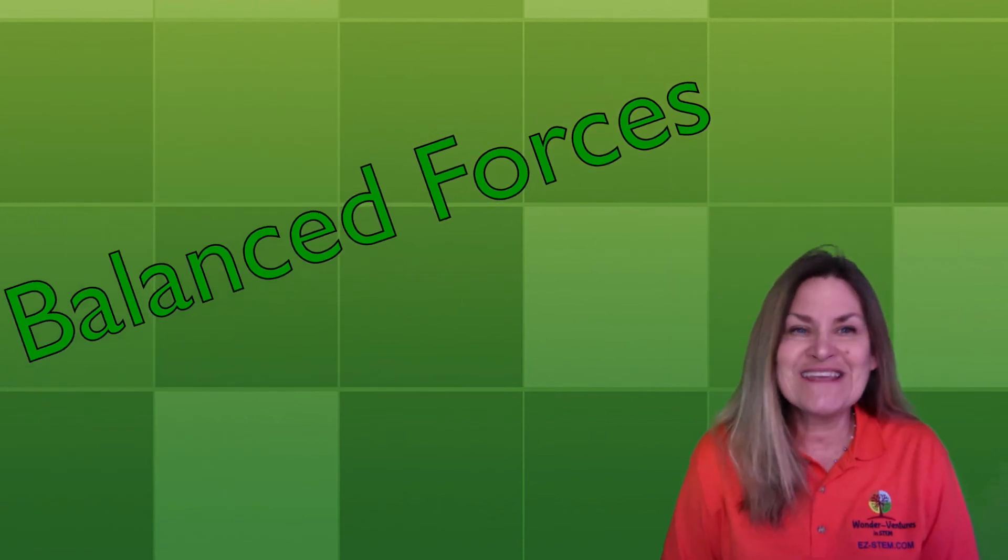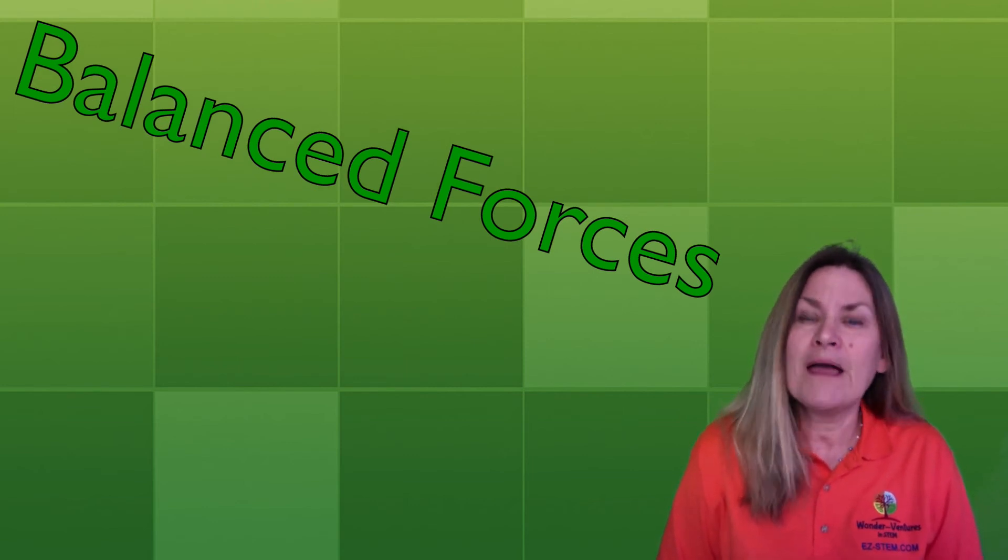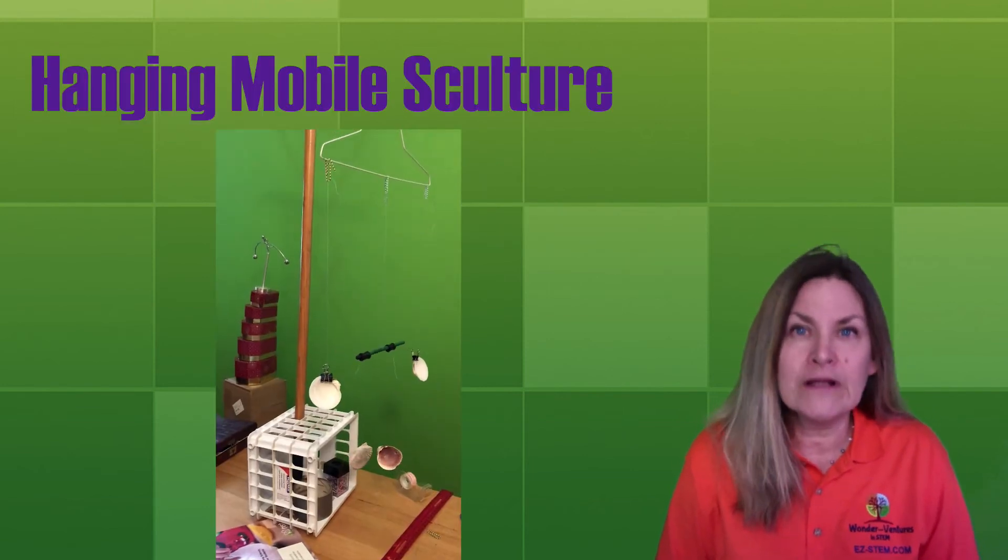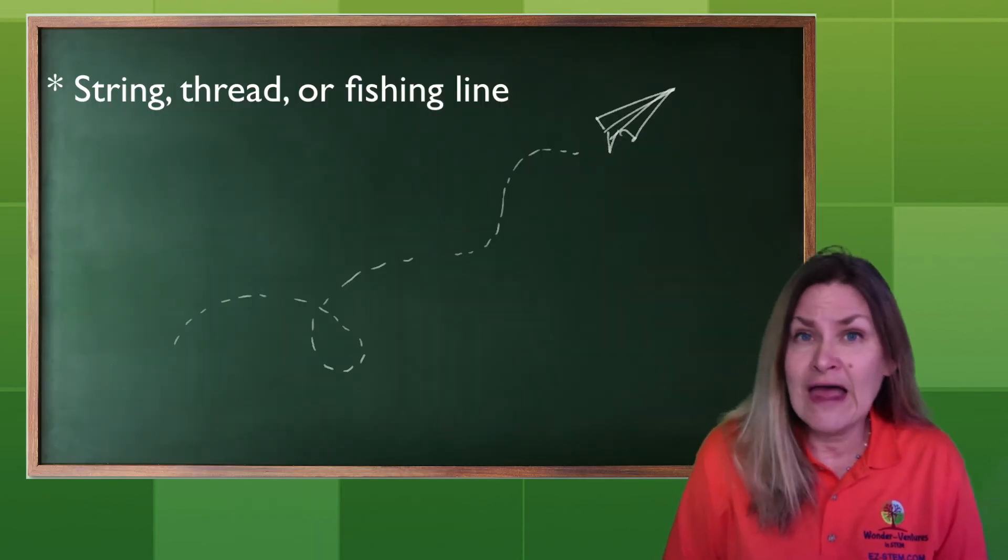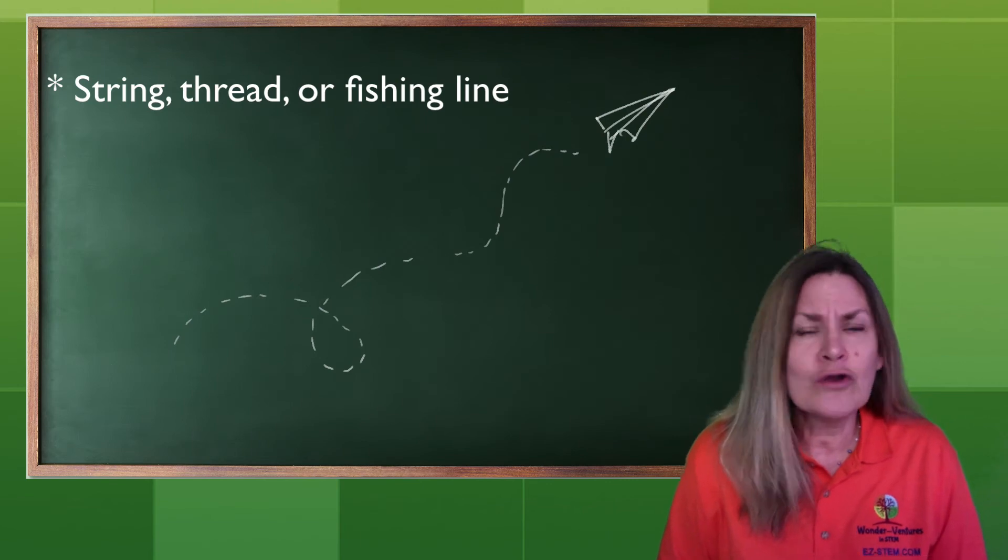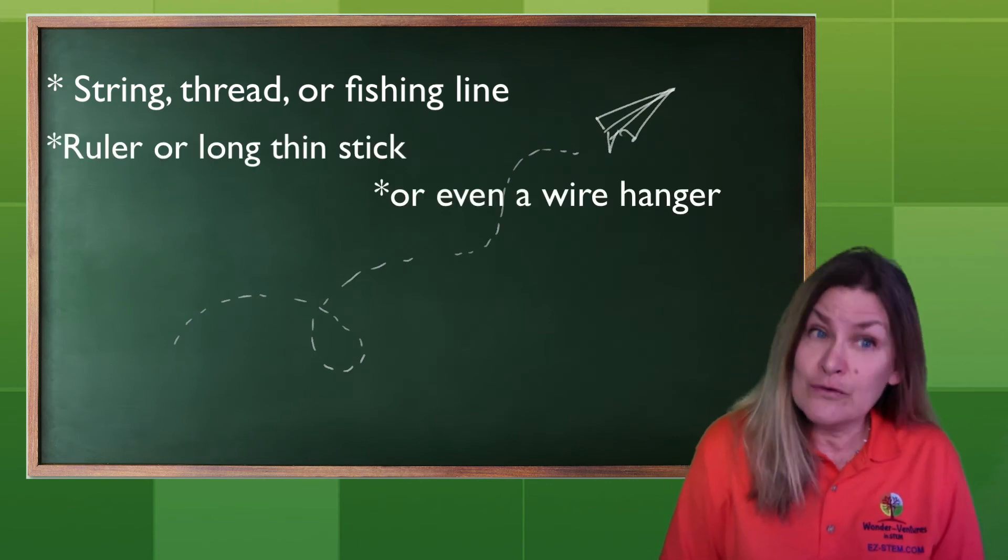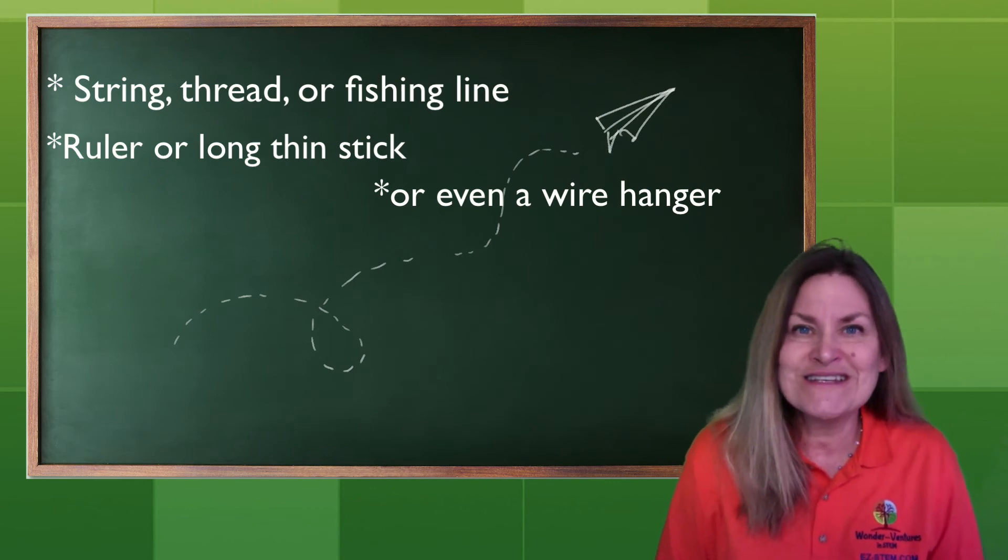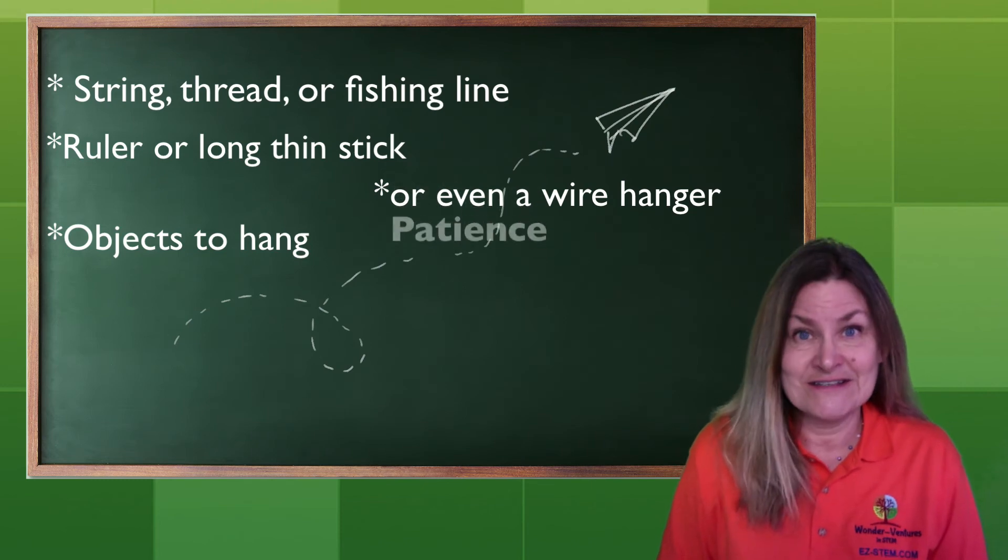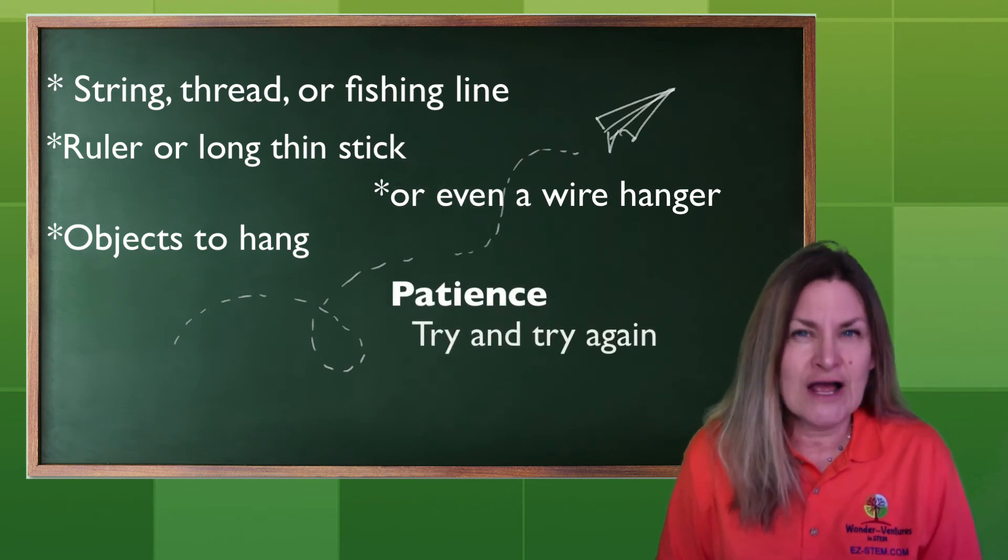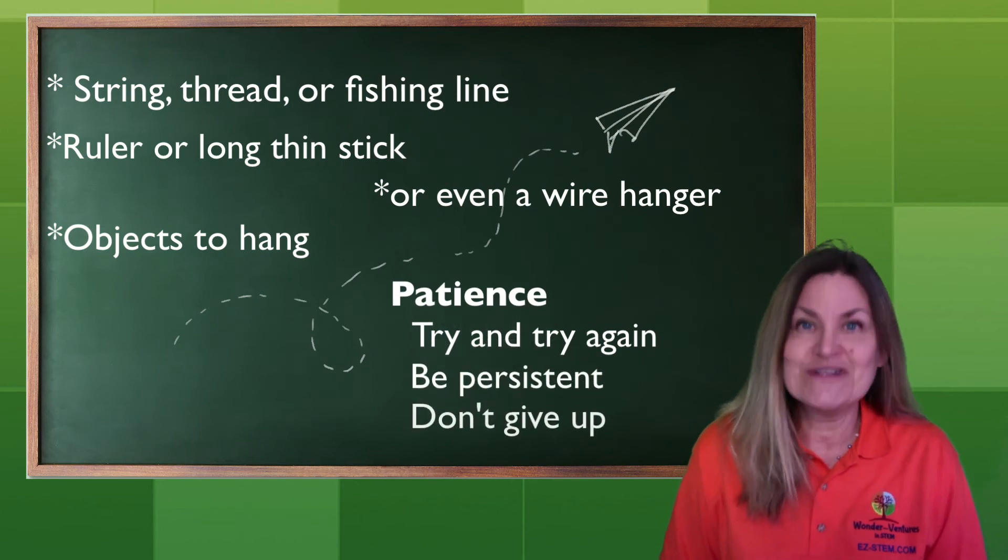Okay, it's time to get creative with our new understanding of balanced forces by making a hanging mobile sculpture. It's easy. You're going to need string or thread or fishing line. You'll also need a ruler or a long thin stick. You can even use a wire hanger. And then you're going to need some objects to hang. You'll also need some patience. That means you're going to need to try and try again. Be persistent. Don't give up.